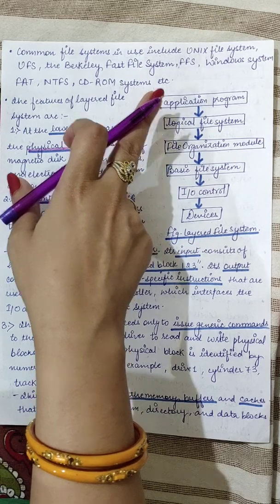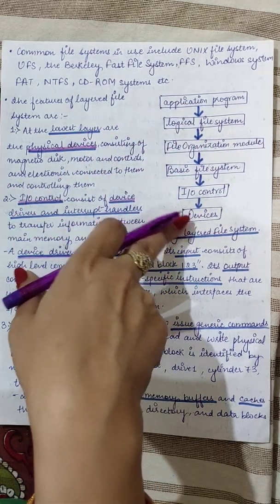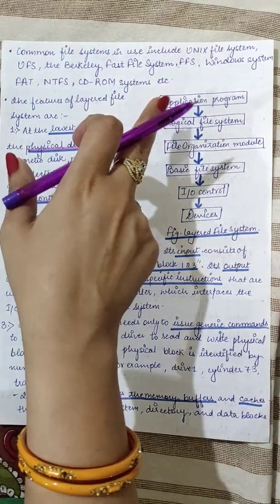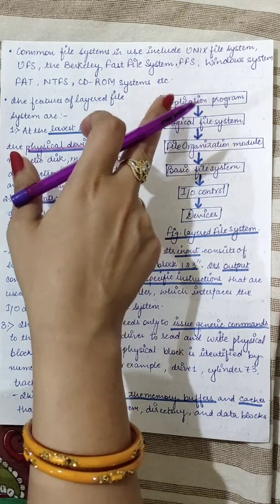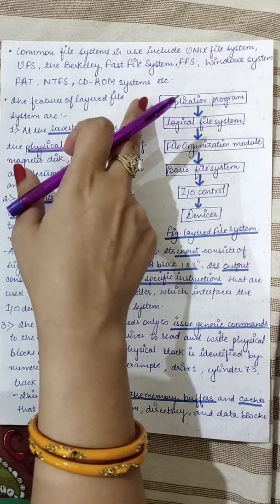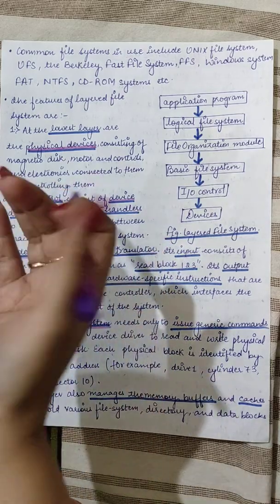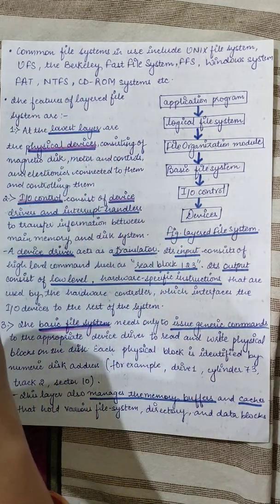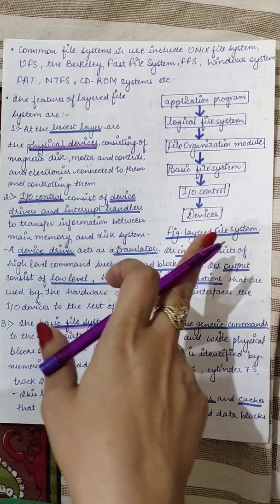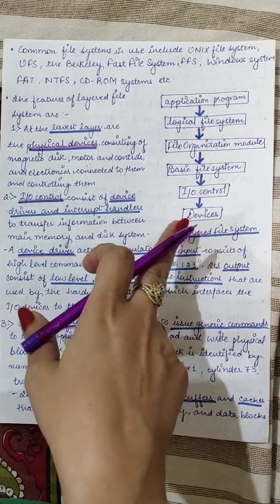Whatever file you have created — a text file or any program file — if you have written a program and want to get it printed, that program is the application program, and the device used will be the printer. The process from the file being written all the way to the output being printed is explained by this layered file system — how that file and program will be handled. The application program is the topmost layer and the devices layer is directly connected to the hardware.